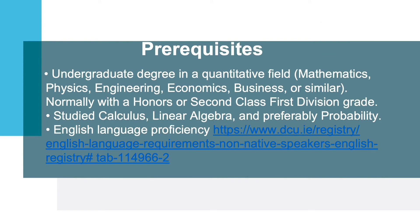To take this program it is necessary to have an undergraduate degree in a quantitative field — typically mathematics, physics, engineering, economics, business, or similar. We do not have a strict definition of what constitutes a quantitative field, but we look at transcripts to understand the extent to which the emphasis is quantitative rather than qualitative. Normally we require an honors or second class first division grade.